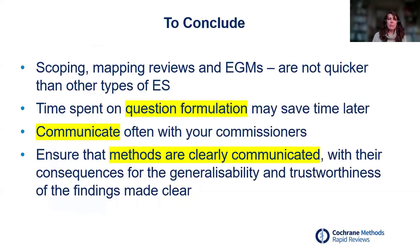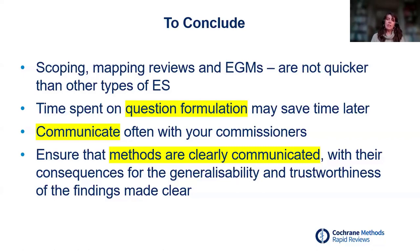To conclude: scoping, mapping reviews, and evidence gap maps are not quicker than other types of evidence synthesis — expect them to take as long as, if not longer than, a full standard systematic review looking at effectiveness. Time spent on question formulation may actually save time later, so be careful not to scrimp on it. Communicate with your commissioners all the way through, and make sure the methods you use are clearly communicated so that the impact of those methods on the generalizability and trustworthiness of your findings can be clearly conveyed.